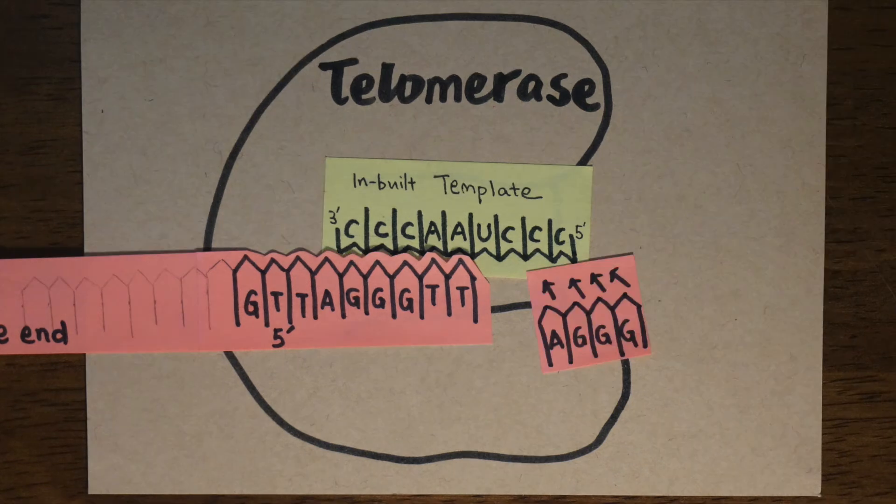Thus, chromosome length is maintained and the cells can continue replicating. Therefore, processing events in the leading and lagging DNA strands result in the loss of telomere repeats with each division, rather than the loss of genetic information.